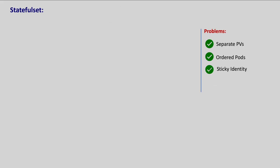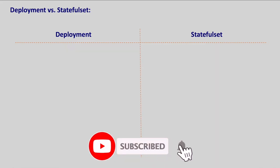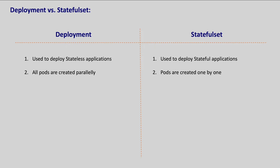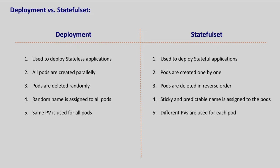Now that we have a very good understanding of what problems StatefulSet solves, let us summarize the differences between Deployment and StatefulSet. Generally, Deployment is used to deploy stateless applications, whereas StatefulSet is used to deploy stateful applications. When we use Deployment, all pods are created in parallel; with StatefulSets, pods are created one by one. When we scale down a Deployment, a random pod is picked and deleted; whereas when we scale down a StatefulSet, the last pod is deleted. In a Deployment, a random name is assigned to all pods; with StatefulSet, a sticky and predictable name is assigned to each pod. In a Deployment, all pods use the same persistent volume; whereas in a StatefulSet, each pod uses its own persistent volume. Finally, scaling with Deployment is much easier compared to StatefulSet.